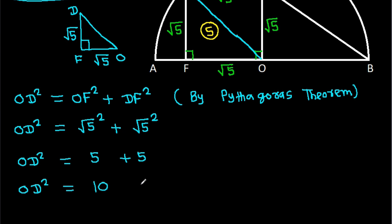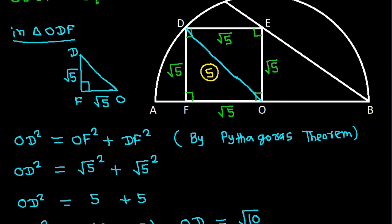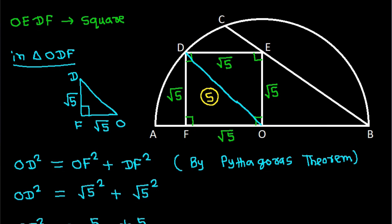OD squared equals 5 plus 5, which is 10. That means OD equals root 10. We get OD is root 10.